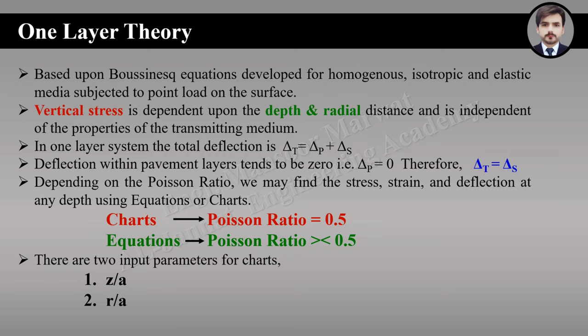Total deflection equals the deflection in the pavement plus deflection at the surface. But in one layer theory we only have a subgrade — there is no external pavement layer. Therefore delta_p is equal to zero, so the total deflection will be equal to the surface deflection.